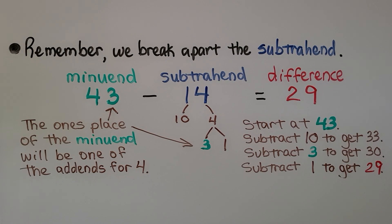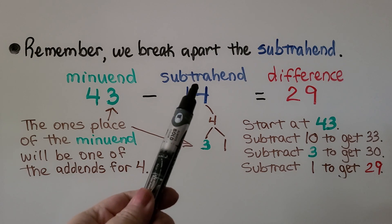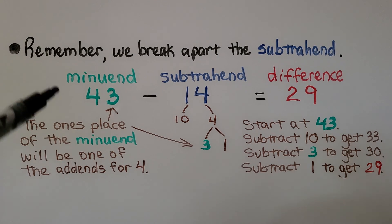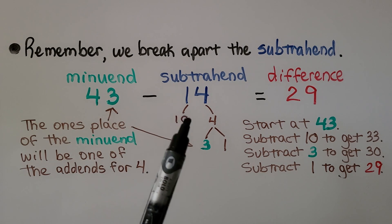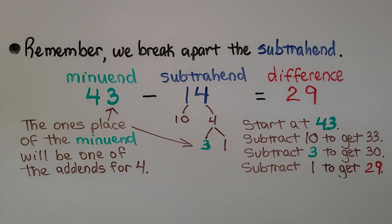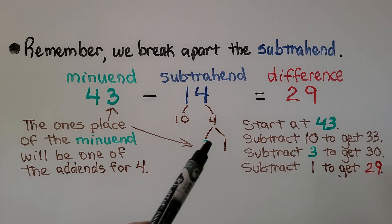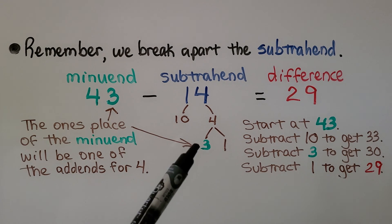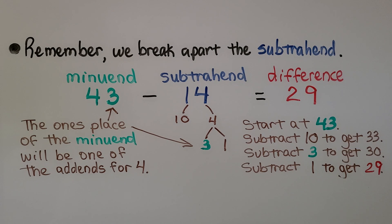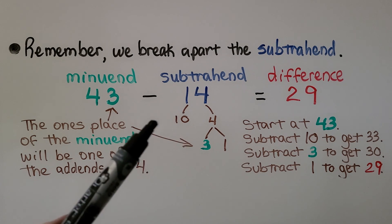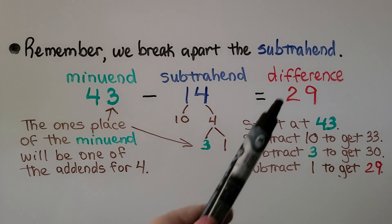Remember, as you're breaking apart two-digit numbers for subtraction and mental math, we break apart the subtrahend. The first number is the minuend; we take away the subtrahend and the answer is the difference. For 43 minus 14, we start at 43 and take away 10 to get to 33. There's a 3 in the ones place of the minuend, which becomes one of the add-ins for the 4. We subtract 3 to get to 30 and subtract one more to get to 29. We took away a 10, a 3, and a 1. The difference is 29.